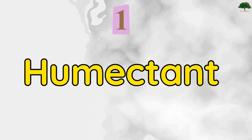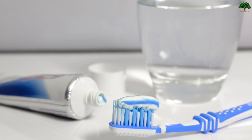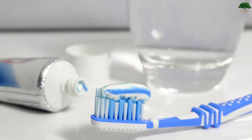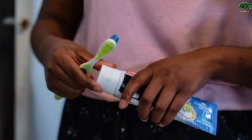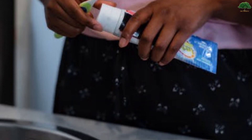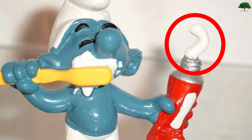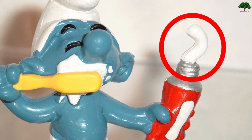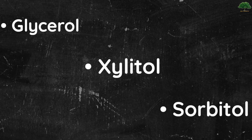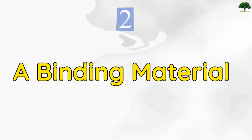Number 1: Humectant. This is a very important ingredient in toothpaste. Without it, toothpaste would not have its paste consistency. Common humectants include glycerol, xylitol, sorbitol, etc. Number 2: Binding material — a thickening agent.